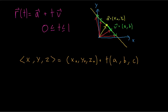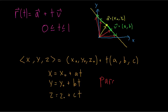Notice that this is the same thing as writing out three separate equations — one for X, one for Y, and one for Z. These three equations are called the parametric equations of the line. We basically separated the vector equation into its three separate components.